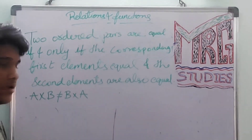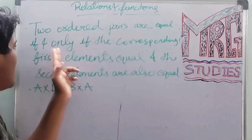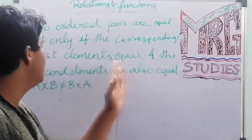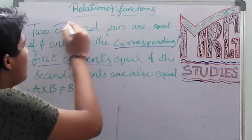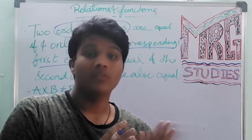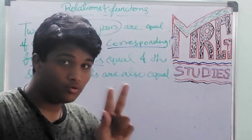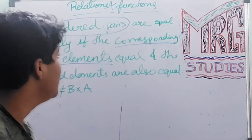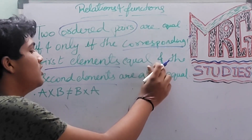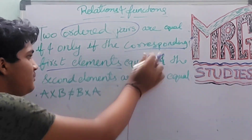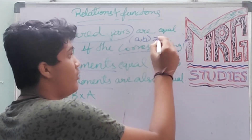First point: two ordered pairs are equal if and only if the corresponding first elements are equal and the second elements are also equal. The pairs which are in order are equal if and only if both corresponding elements match. Also note that (A, B) is not equal to (B, A).